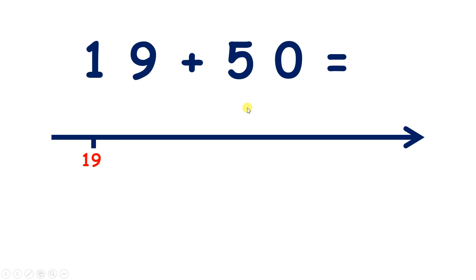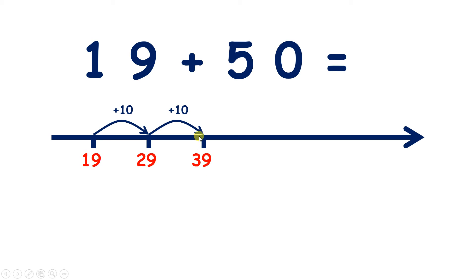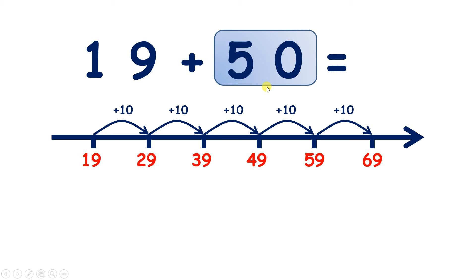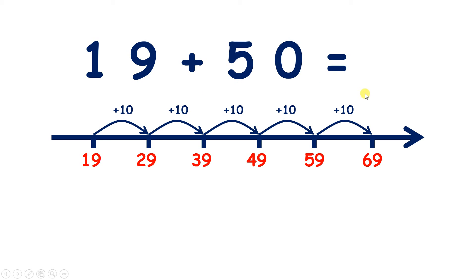Now we have 19 plus 50. Pause the video, and using the number line to help you, see if you can add 19 and 50. Well, we're adding 50, so that's five tens. So we can add 10 to make 29. Another 10, 39. Another 10, 49. Another 10, 59. And one more 10, makes 69. So we've added 50 because we've added five tens — we've added 10 five times. So 19 plus 50 is 69.